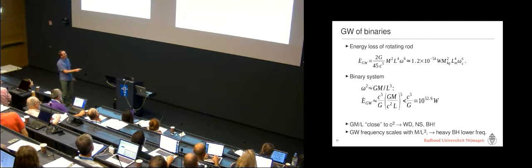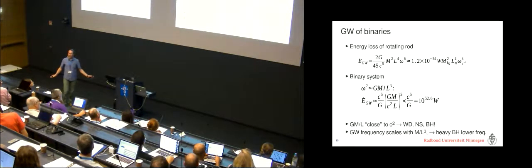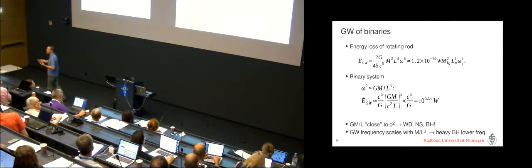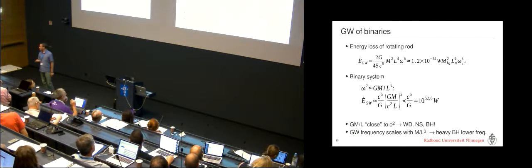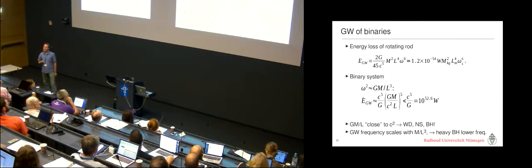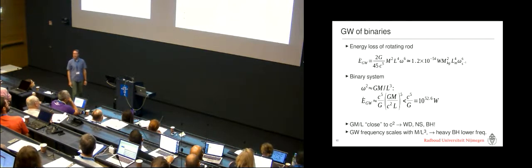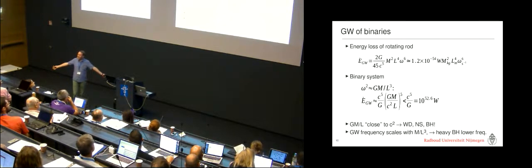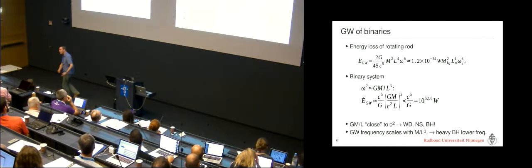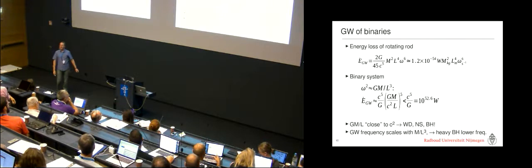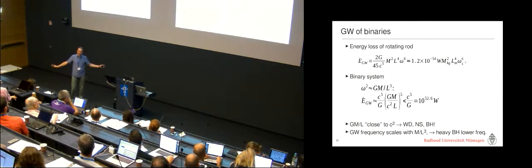G M over L divided by C squared is typically extremely small, except, of course, if you are close to something like a black hole, where this term all of a sudden gets in the order of one. And so that's the magic of gravitational waves. Normally, you talk about something like 10 to the minus 54 watts. However, if we talk about black holes, all of a sudden you can go to the complete other side of the spectrum and the most energetic thing ever.